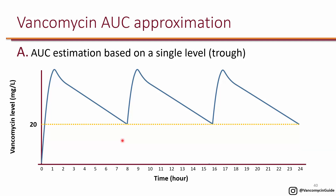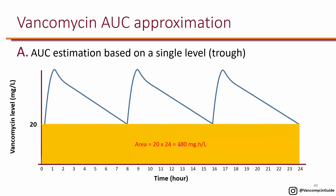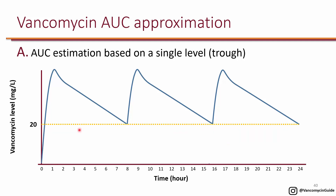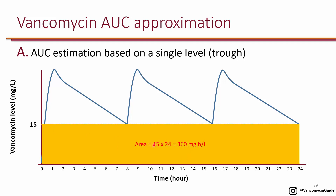Now if you have a trough of 20, then 20 times 24 is at least 480, so you definitely achieve an AUC of at least 400 — a trough of 20 is overkill. Between 15 and 20: a trough of 15 gives you 360 and a trough of 20 gives you 480. For serious infections, the guidelines said if you target a trough of 15 to 20 you're basically guaranteed to have an AUC of 400 — though in the case of 15 to 20, this could actually be overdosing.